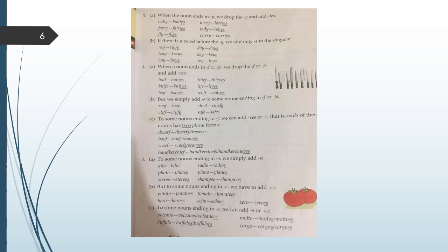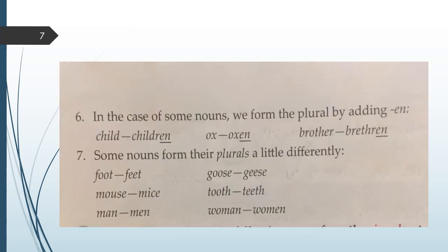To some nouns ending in O, we can add S or ES. Volcano, volcanoes or volcanos. Buffalo, buffaloes or buffalos. Motto, mottos or mottoes. Cargo, cargos or cargoes. In the case of some nouns, we form the plural by adding EN. Child, children. Ox, oxen. Brother, brethren.